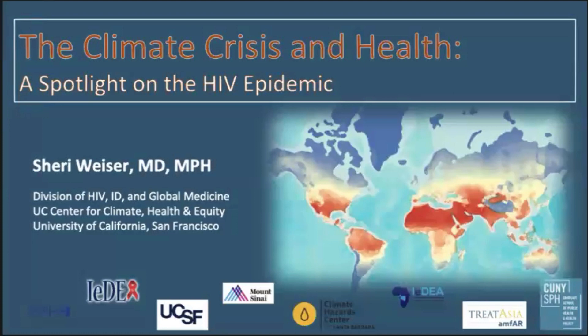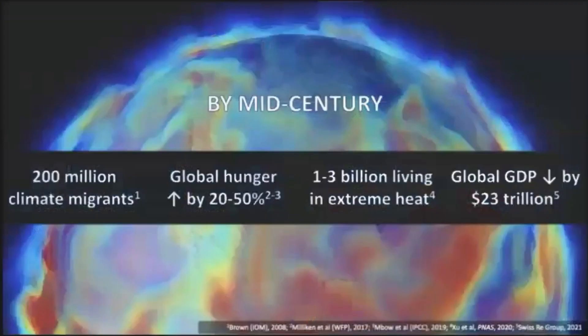Thank you so much. I'm going to get us started by really describing some background and the pathways through which climate change negatively impacts HIV outcomes. So climate change — we're all here because climate change is unquestionable — what we think is the biggest public health crisis of the 21st century. We expect that there's going to be 200 million climate migrants by the year 2050.